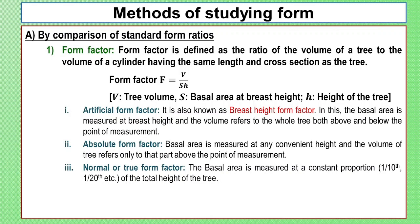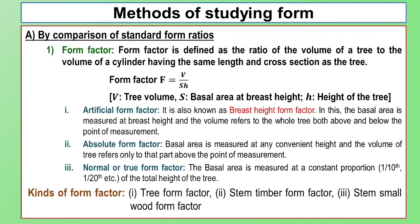In the Normal Form Factor, the basal area is measured at a constant proportion — one tenth or one twentieth — of the total height of the tree. There are also three kinds of form factor: stem timber form factor and stem small wood form factor.